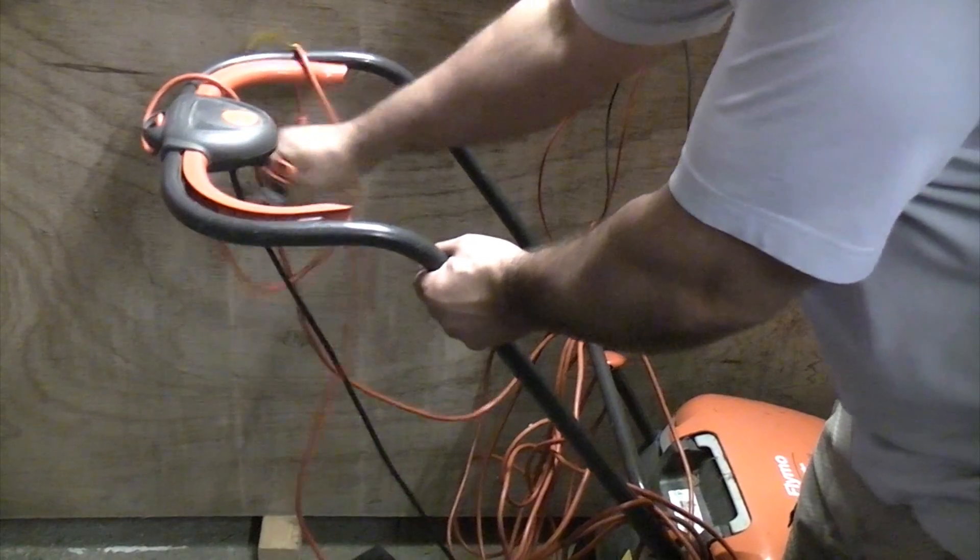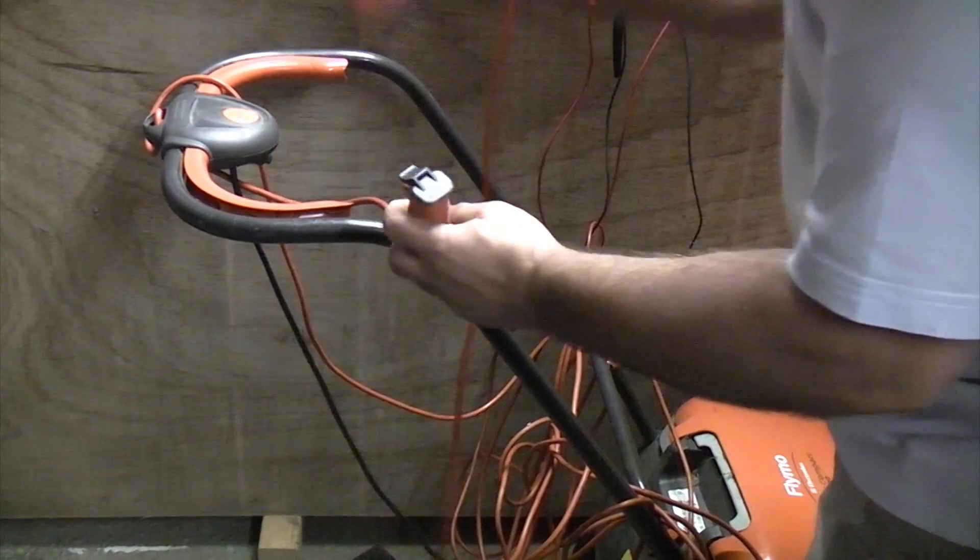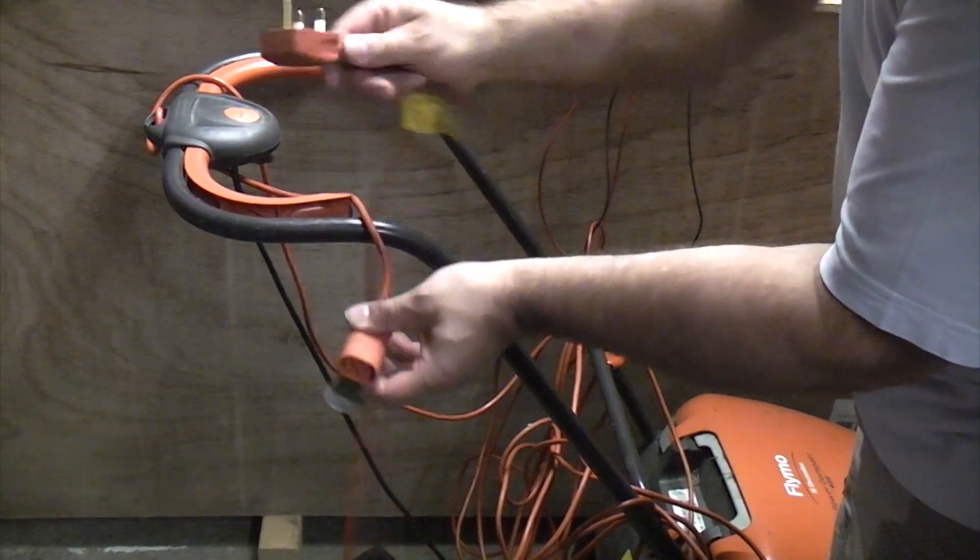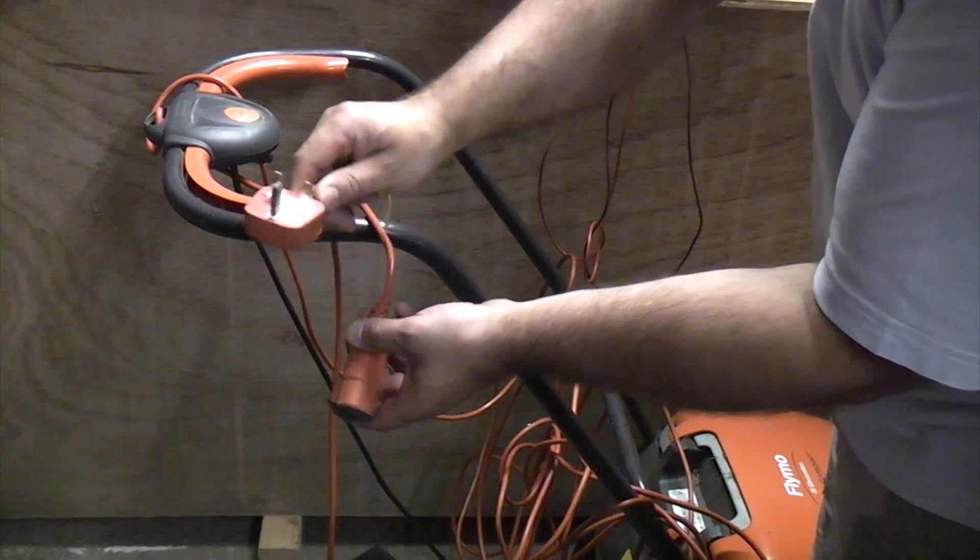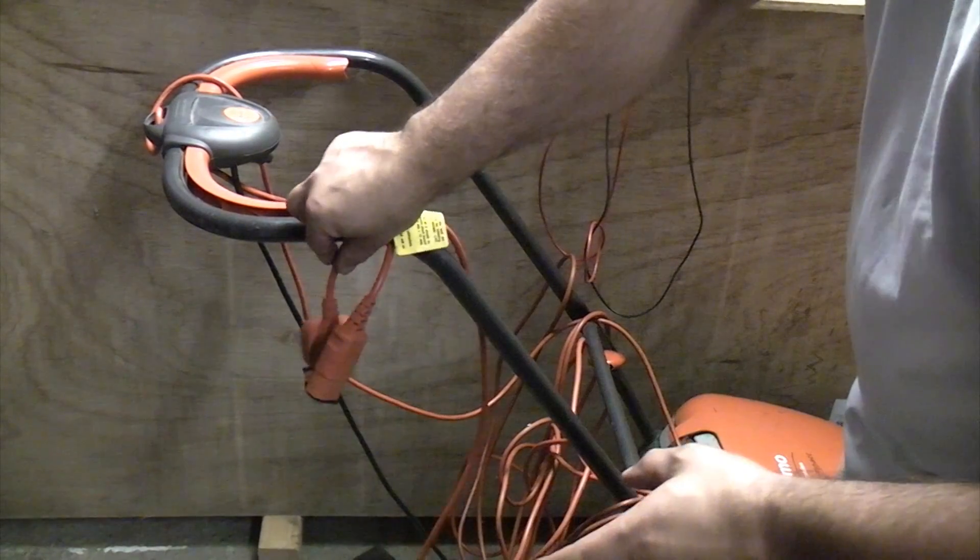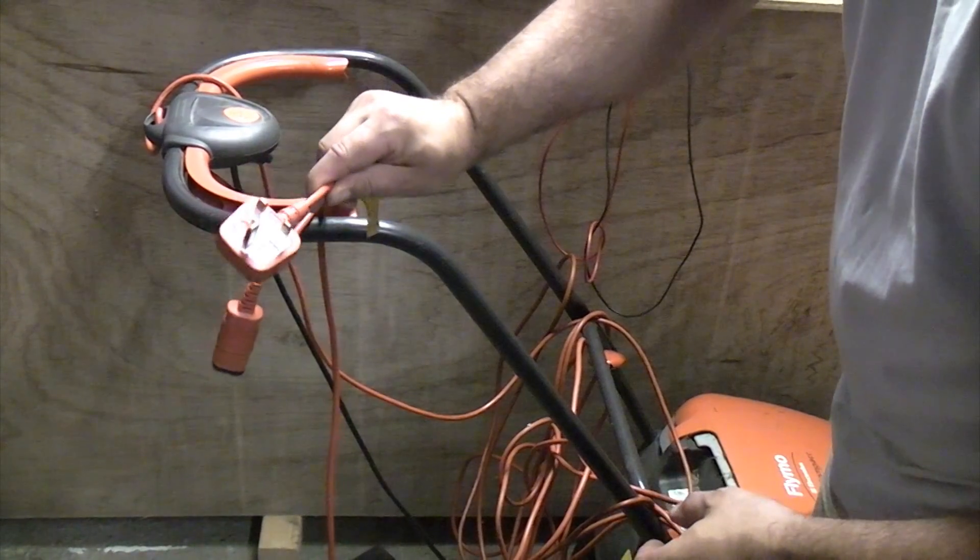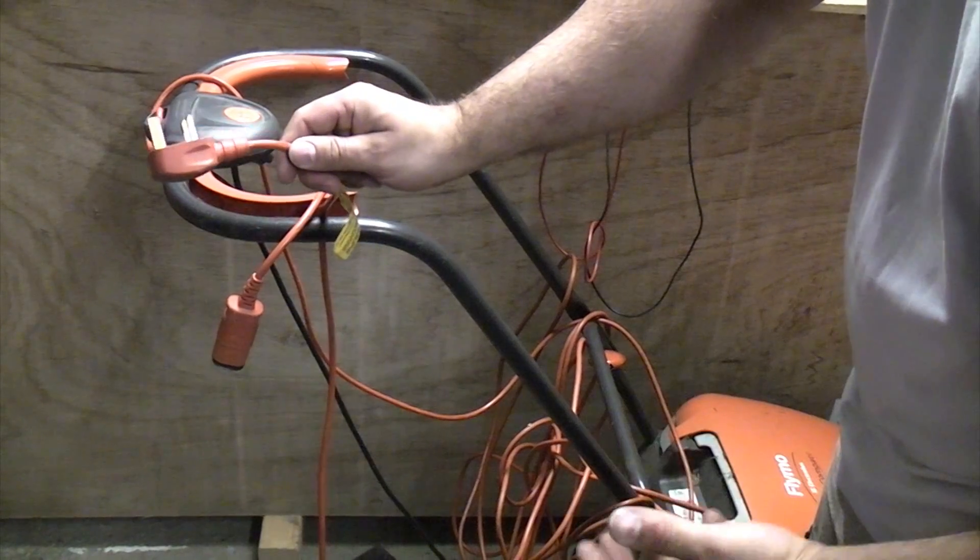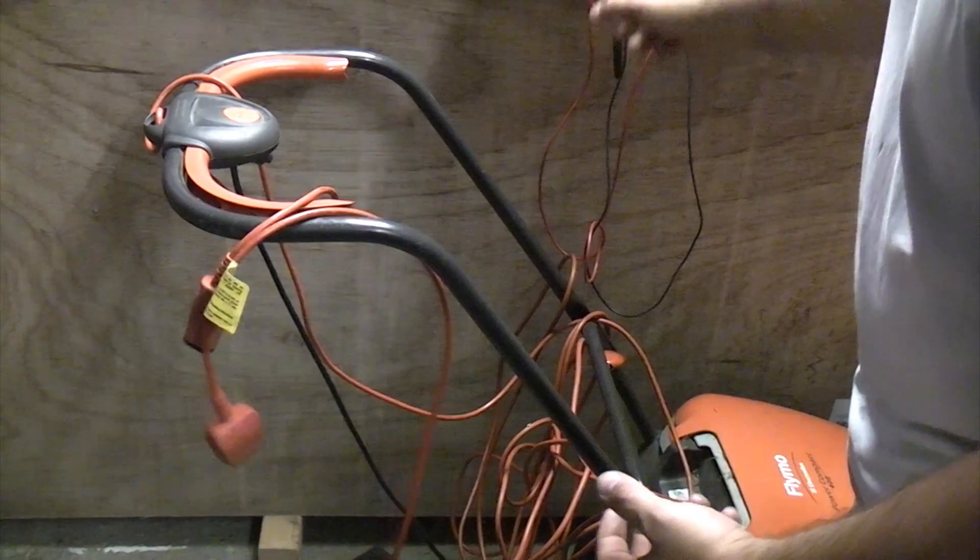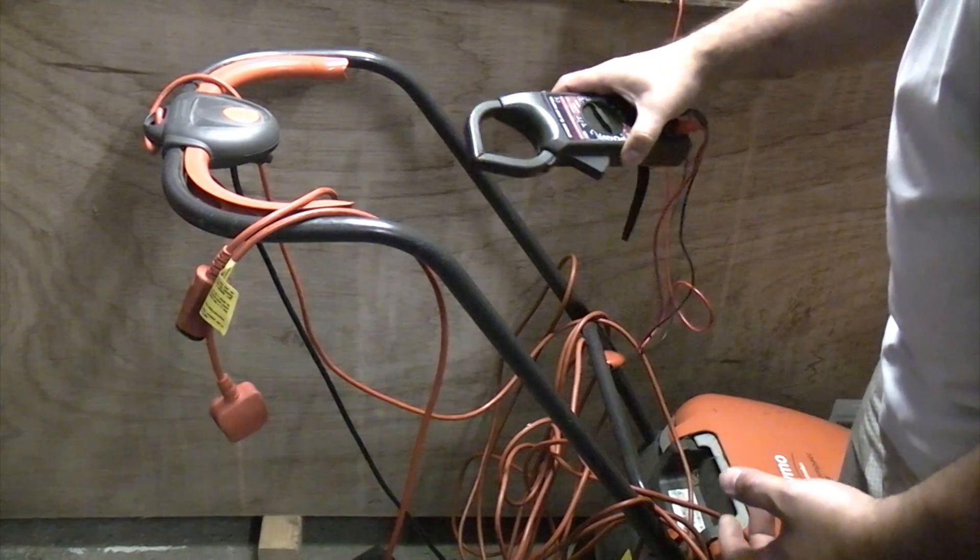So we're just going to unplug it from the actual machine. So we've got the plug there that goes into the machine and the plug there that goes into the mains. It's important whenever you do any electrical fault finding that you unplug your appliance from the mains because you don't need electricity to actually locate a fault. You can do it quite easily just using a multimeter.